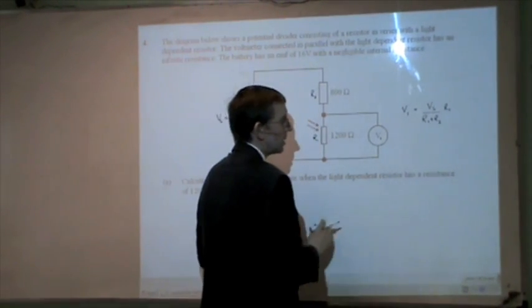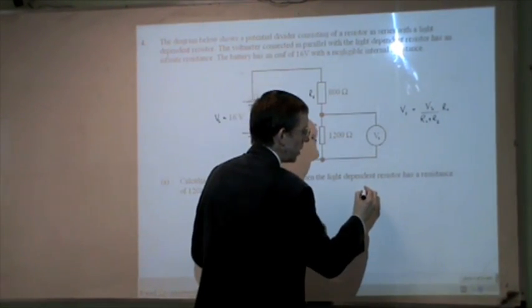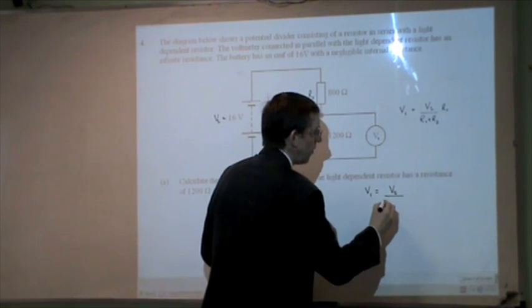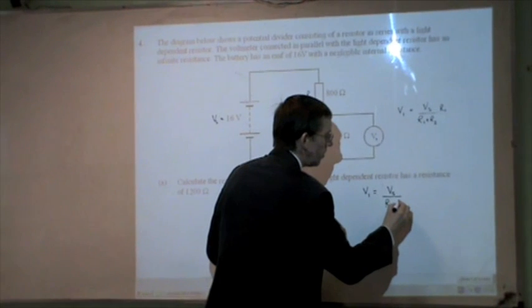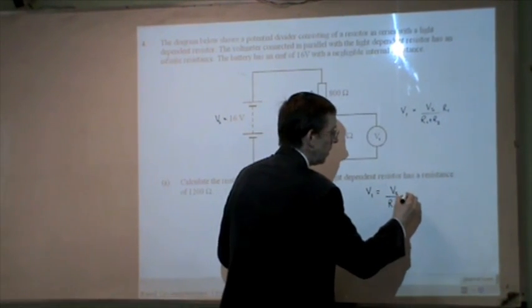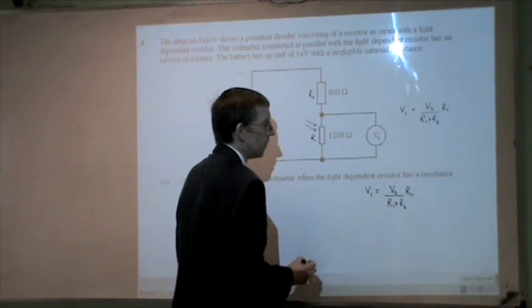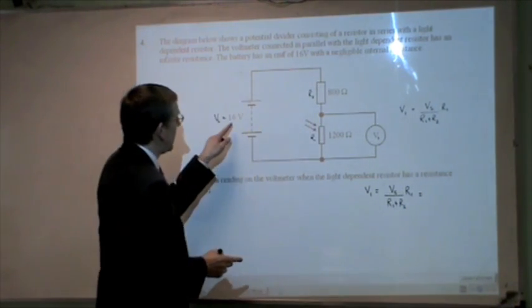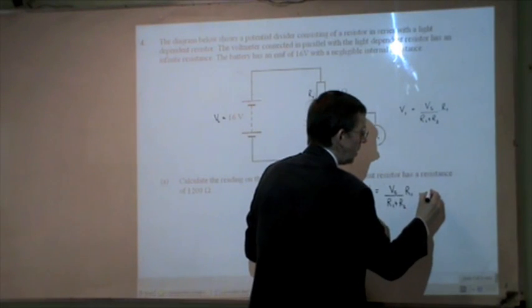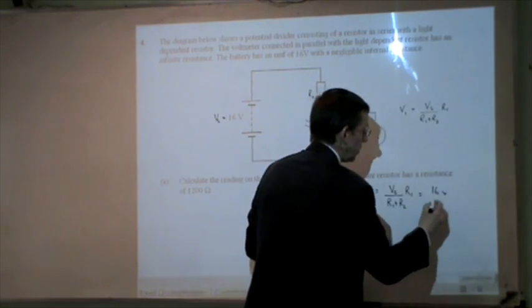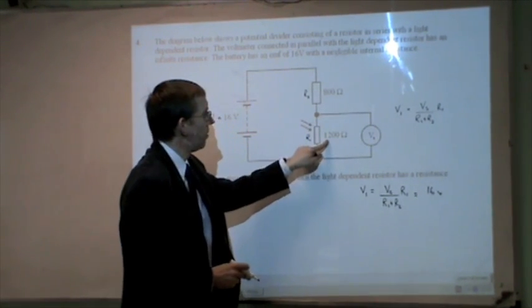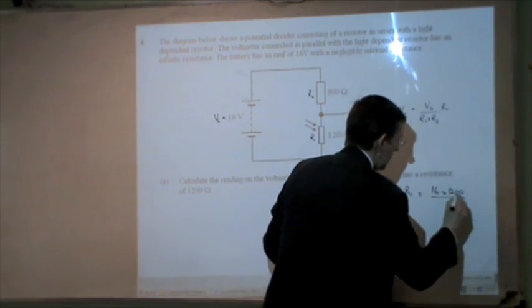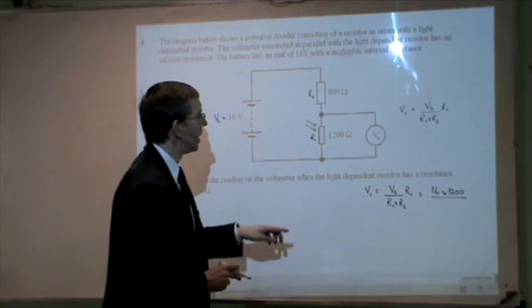So let's solve this then. Write the formula out again. V1 equals Vs over R1 plus R2 multiplied by R1. So I can substitute in the values to get Vs is 16 volts. So that's 16 multiplied by R1 which is 1200 ohms divided by R1 plus R2.